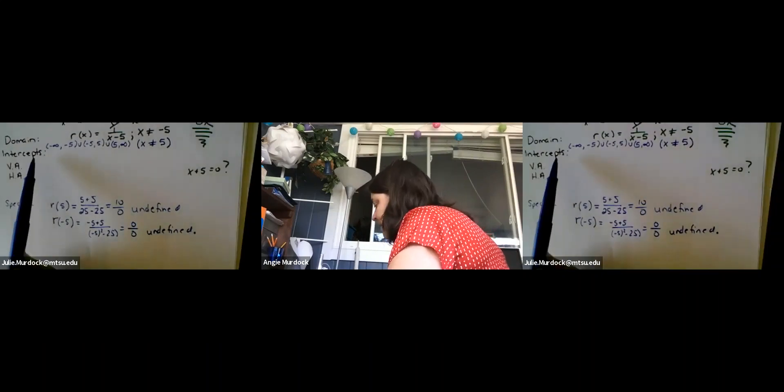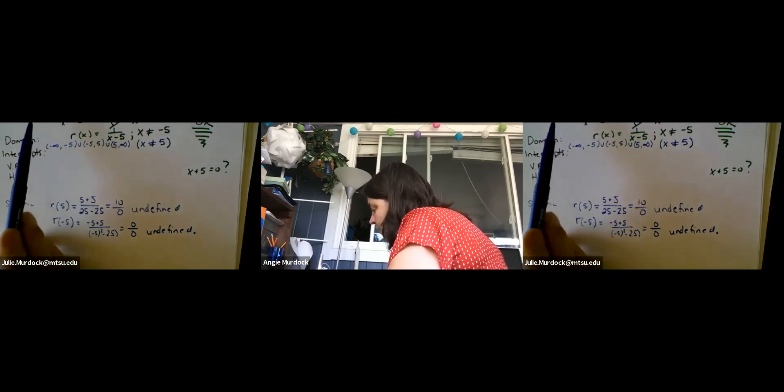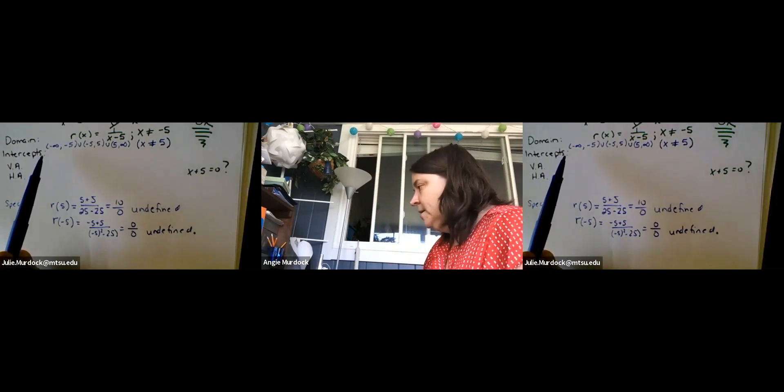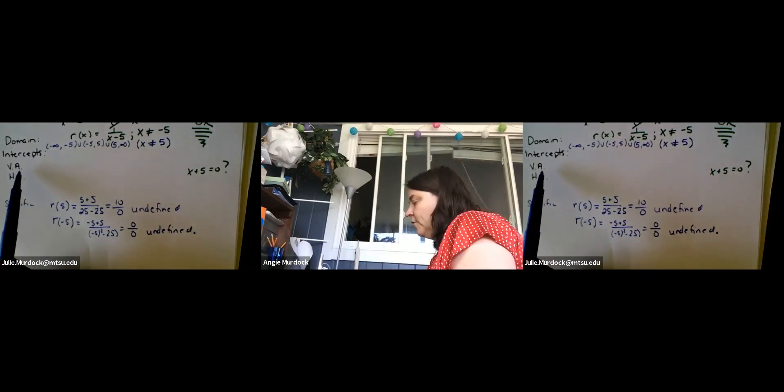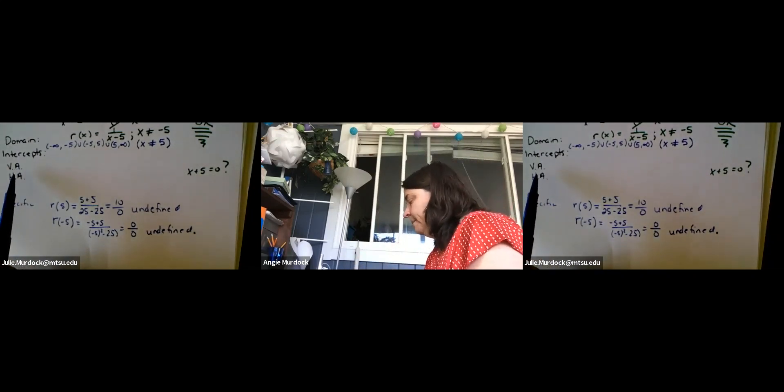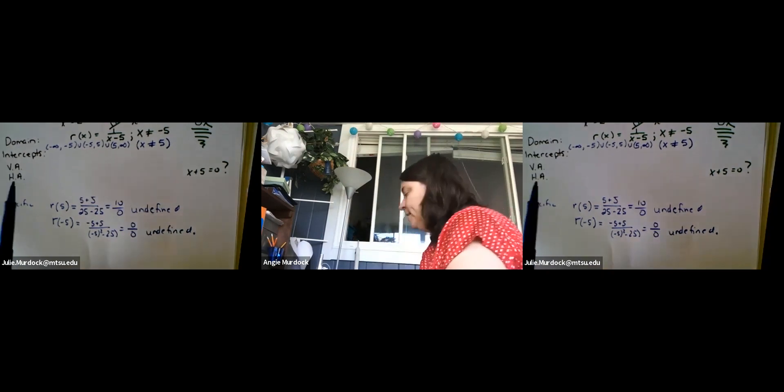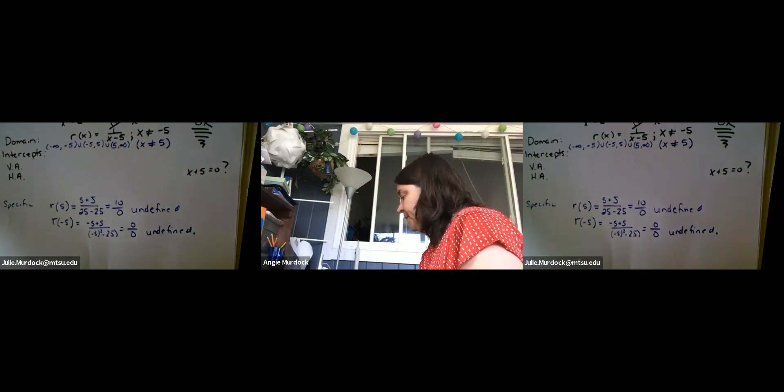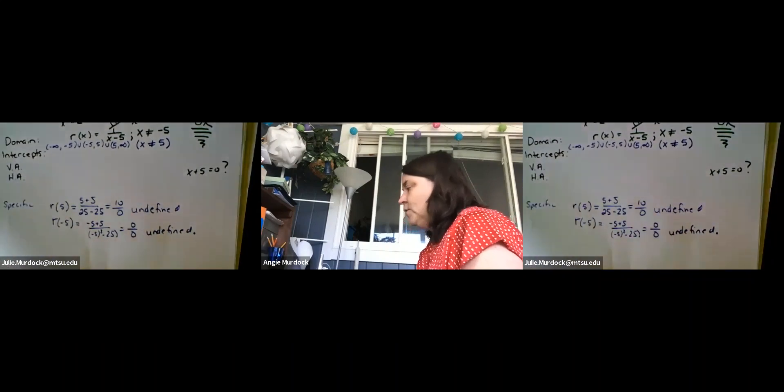So let me give you about 20 seconds to go back and just think for R what you might believe the intercepts to be, what you recall the vertical asymptote being, and then if you can think ahead, maybe you remember from high school how to find that horizontal asymptote. So see if you can answer the next three questions.